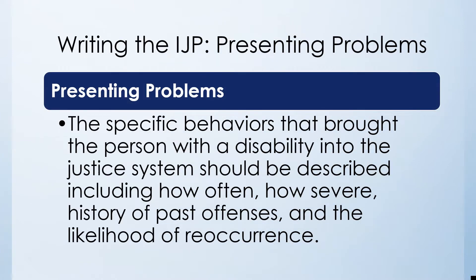The first step in writing an IJP is to clearly define what the presenting problem is and the specific behaviors that brought the person with a disability into the justice system or create at-risk behaviors for involvement in the justice system. In this section, you describe the behavior and include information regarding frequency, severity, history if it exists, and the likelihood of the occurrence of this behavior for the person.